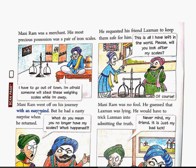Then Mani Ram went off on his journey with an easy mind - be fikr hoke, with peace of mind. But he had a nasty surprise when he returned. Jab wo wapas lote, unko ek surprise mili. Children, there may be two types of surprises - a joyful one and a nasty one, means a sorrowful one. Toh Mani Ram jab wapas shahar se lote, usko ek sorrowful surprise mili.